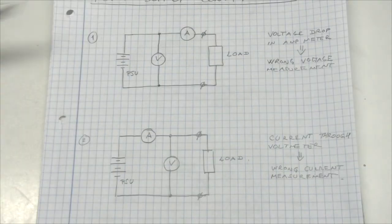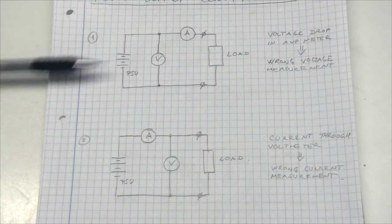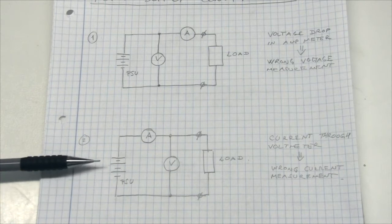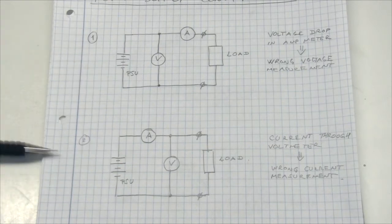Now just to recap, I'm showing both configurations at the same time. The first one is always measuring current correctly. And the lower one, number two, is always measuring voltage correctly. And the question is, which one should we use?